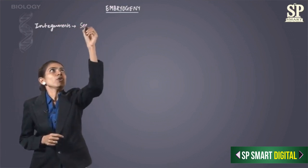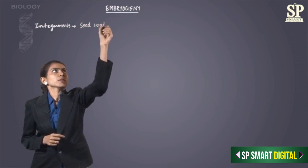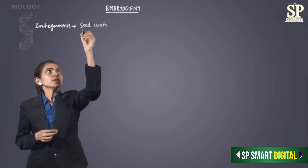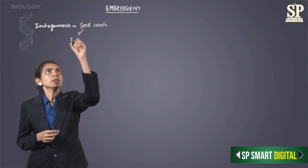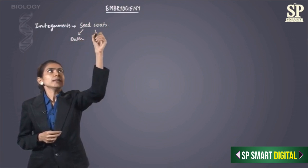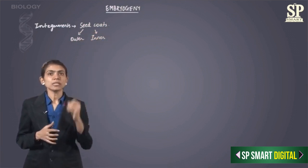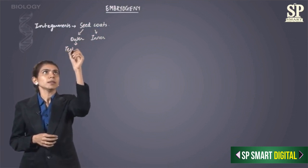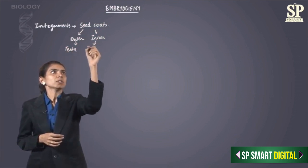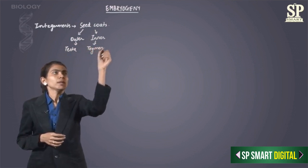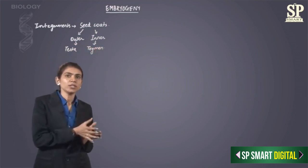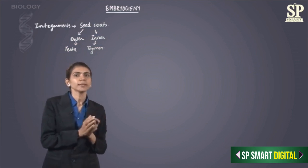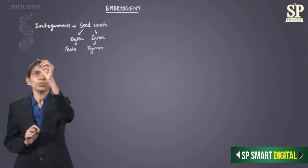What they form are seed coats, and there are two seed coats: the outer and the inner. The outer seed coat, which is the thick one, is called the testa, and the inner seed coat is called the tegmen. So this was about the integuments changing into seed coat.